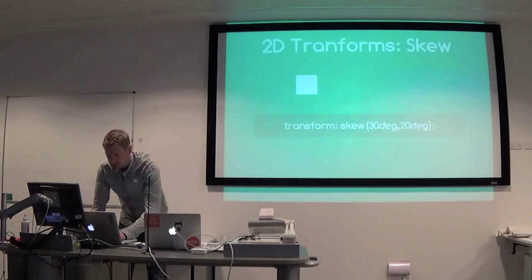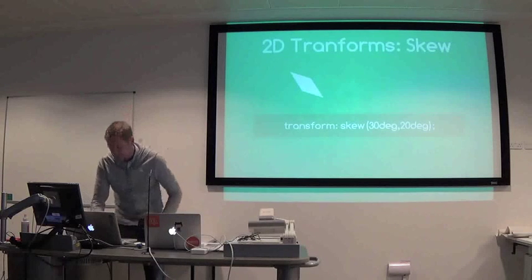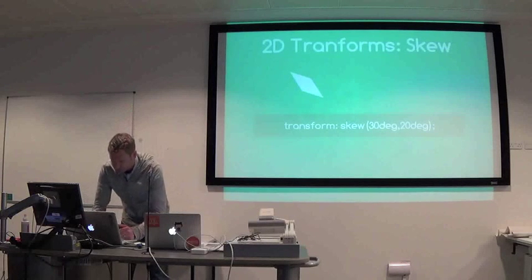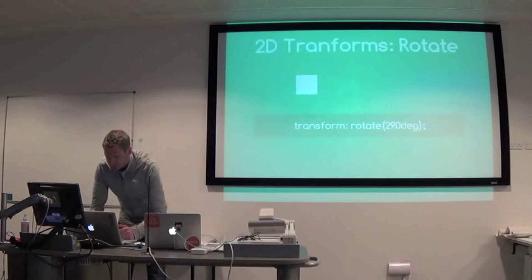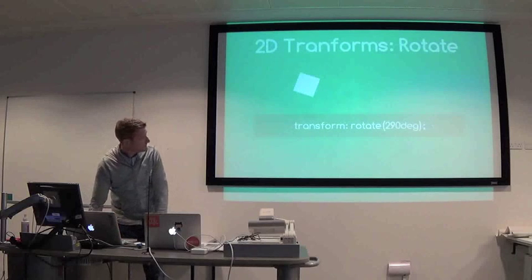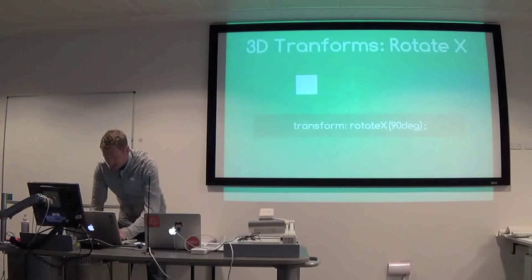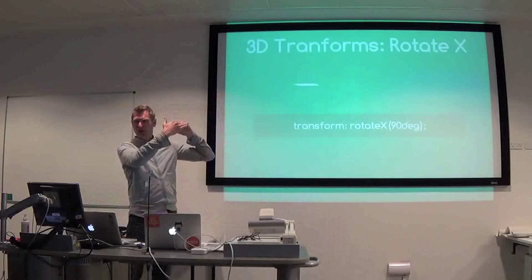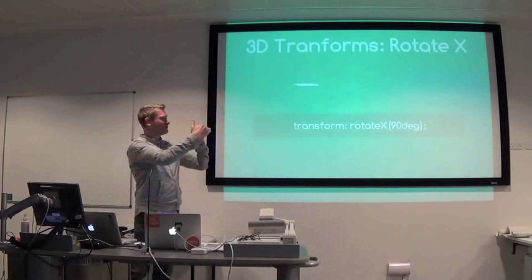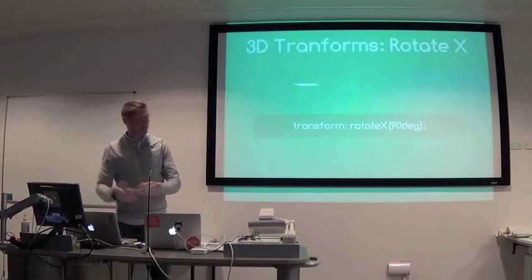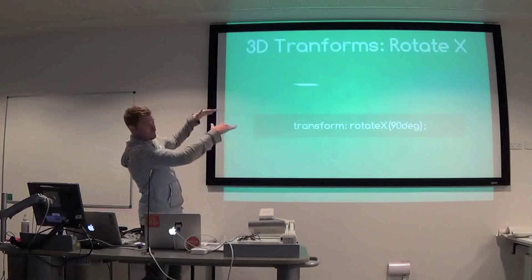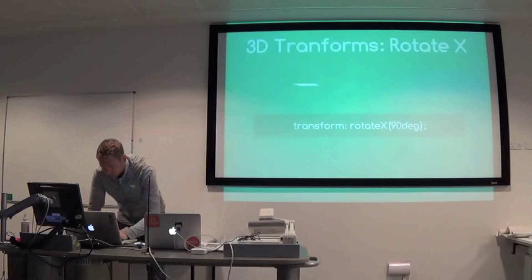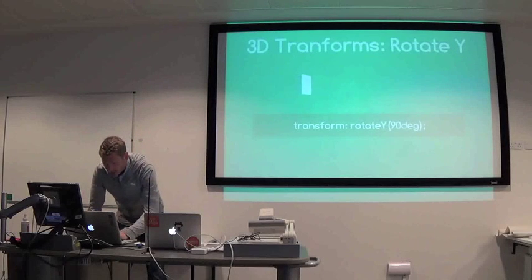Skew jumps. Rotate — you can see that rotating there at angles. Because of the transform-origin, if you change that origin you can make it rotate around different points so the perspective looks different. You can adjust both X and Y as well.